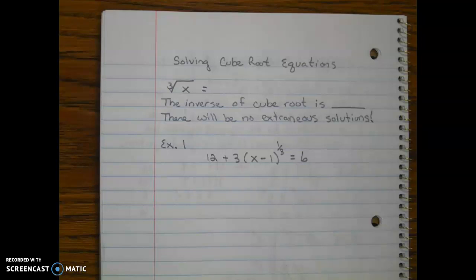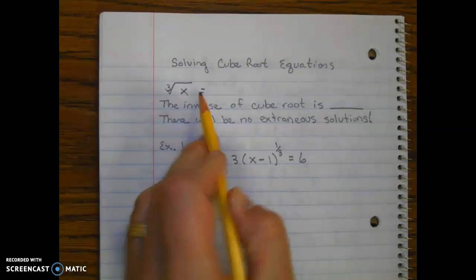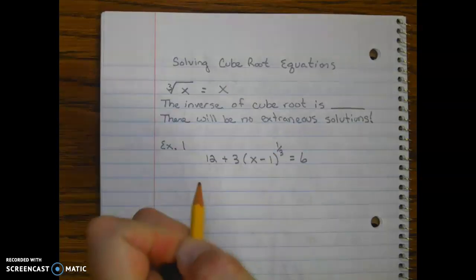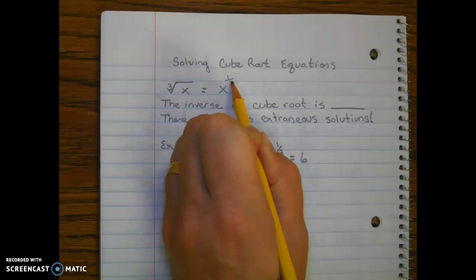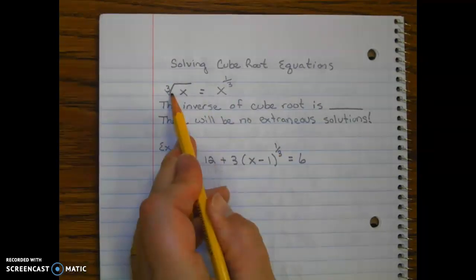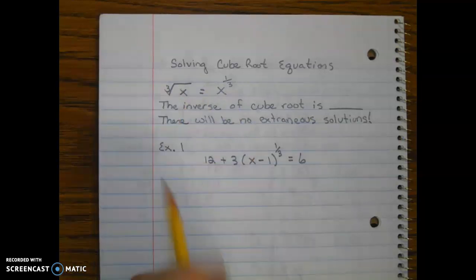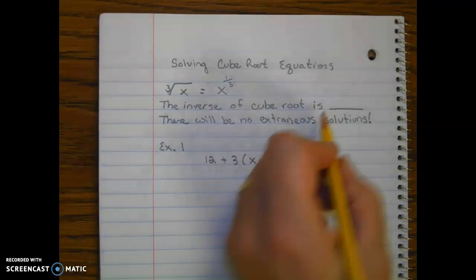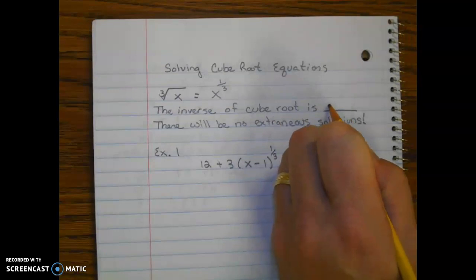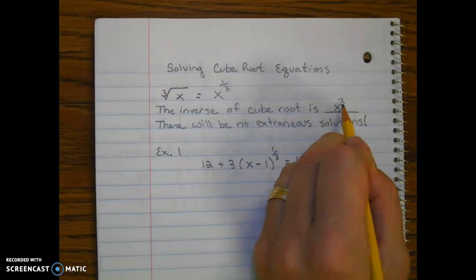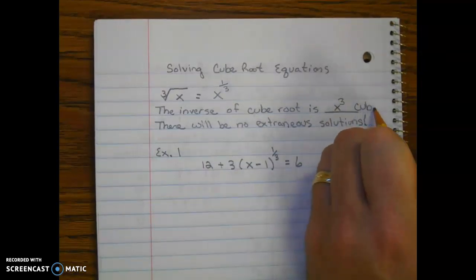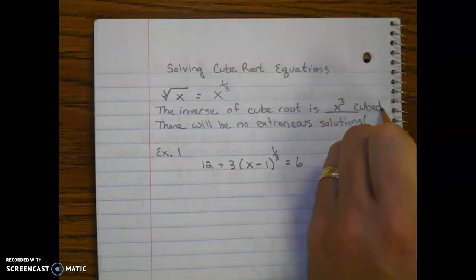Now we'll look at solving cube root equations. The cube root of x can be written with a rational exponent: the power on the radicand goes on top of the fraction and the root goes on the bottom, so it's x to the one-third power. These are equivalent expressions, just different formats. The inverse of a cube root is cubing — raising to the third power.